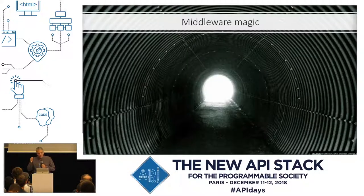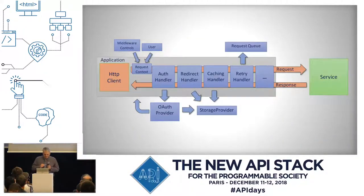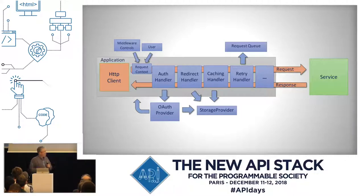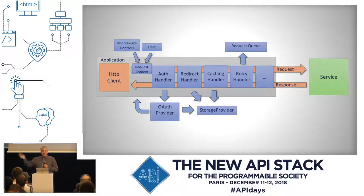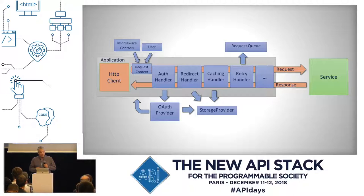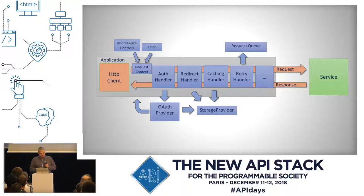Let's dig a little bit more into middleware. You're making a request and getting a response back from your service. What are the kinds of things we can do? We can put authorization handlers in there to generate tokens automatically. We can deal with redirects automatically. Caching — private caching is a vastly underused capability on the client side; bundle it in your SDK. Retry handling — who wants to deal with 429s when it can just be done automatically?